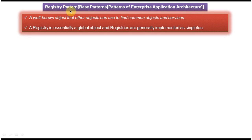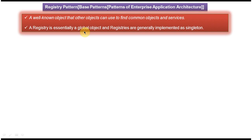Today I will cover the Registry design pattern. This pattern belongs to base patterns, which belongs to Patterns of Enterprise Application Architecture. The explanation is: a well-known object that other objects can use to find common objects and services. A registry is a global object — some kind of global object that other objects will use to find common objects and services.